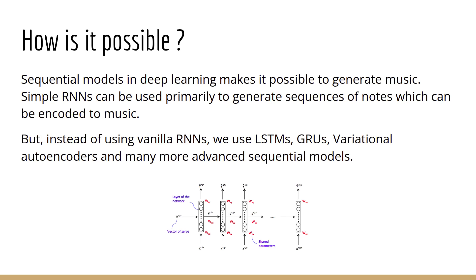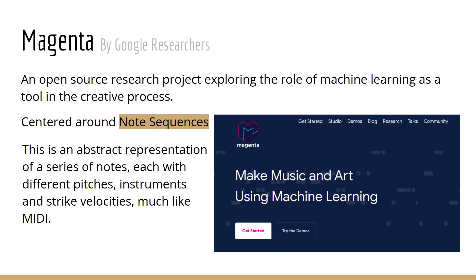We have recurrent neural networks that can be used practically to generate sequences of notes which can be encoded to music. But due to their own disadvantages, we do not use simple vanilla RNNs. Instead, we use more advanced versions like LSTMs, GRUs, variational encoders, and many more types of sequential models.